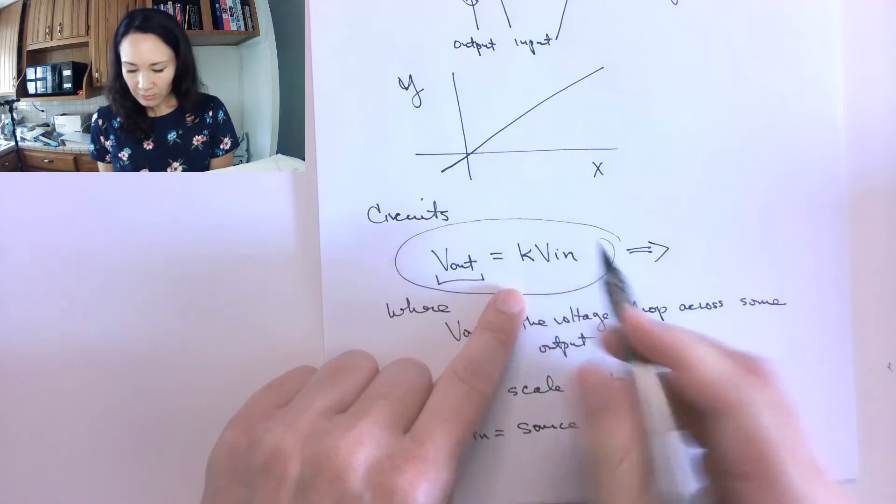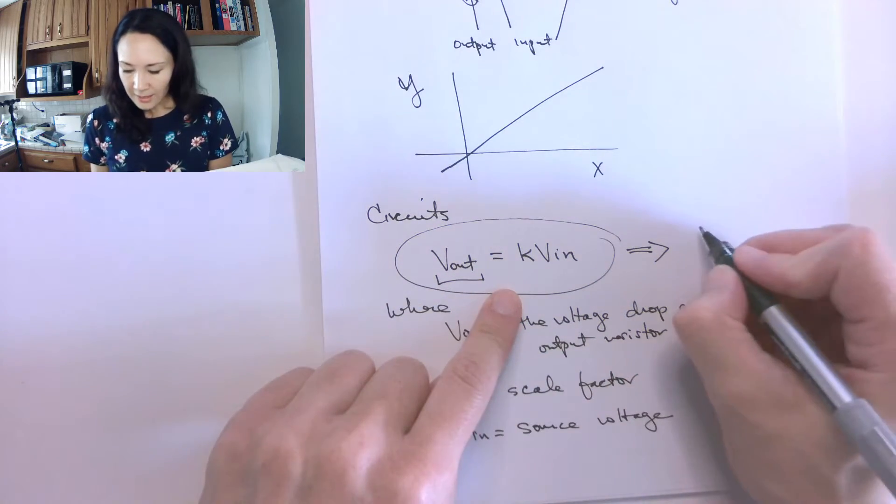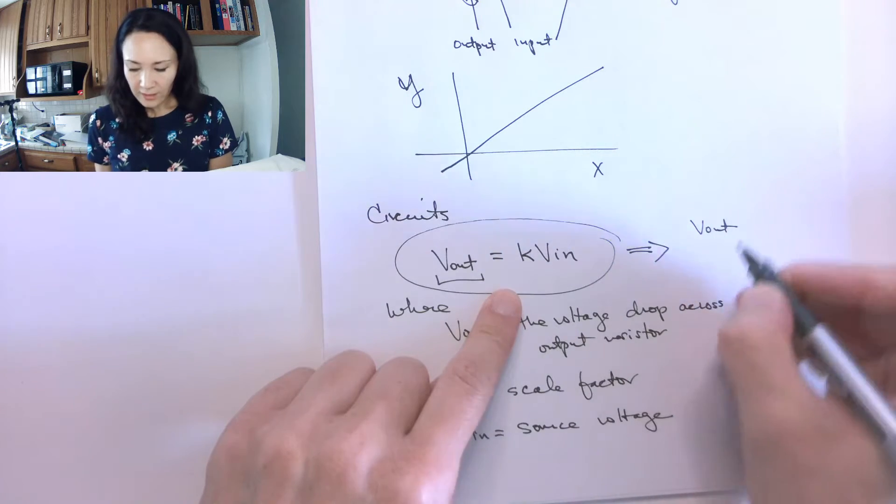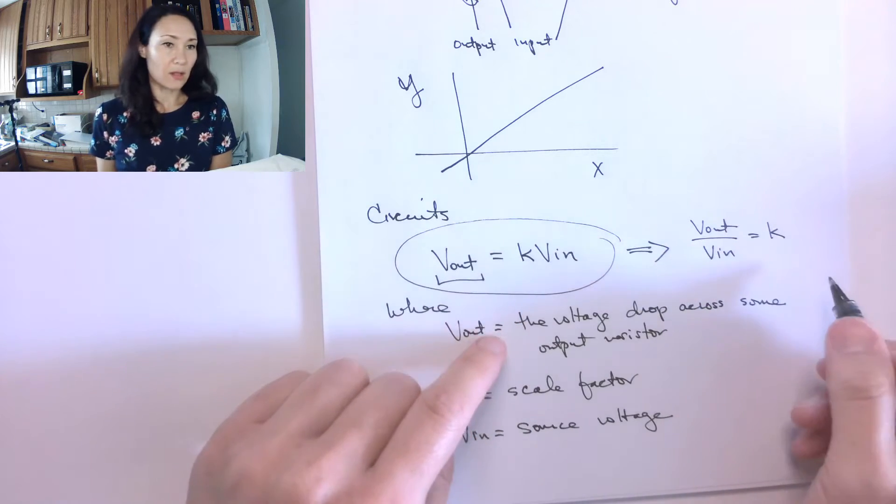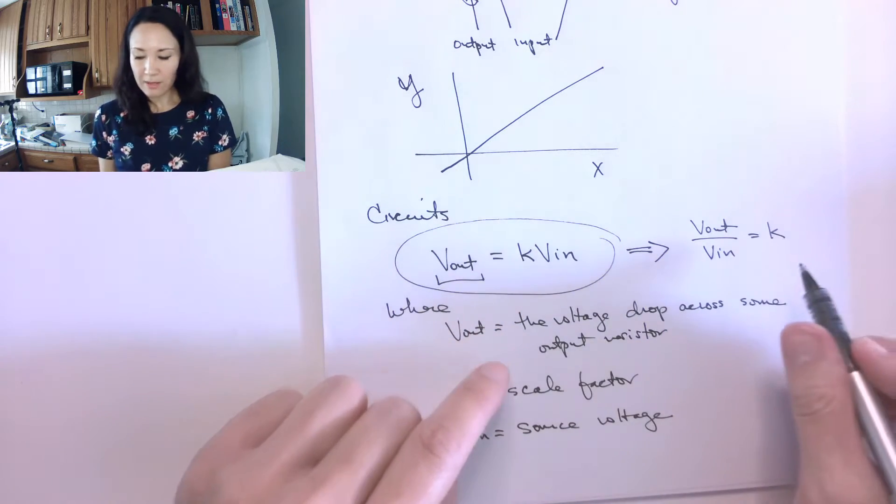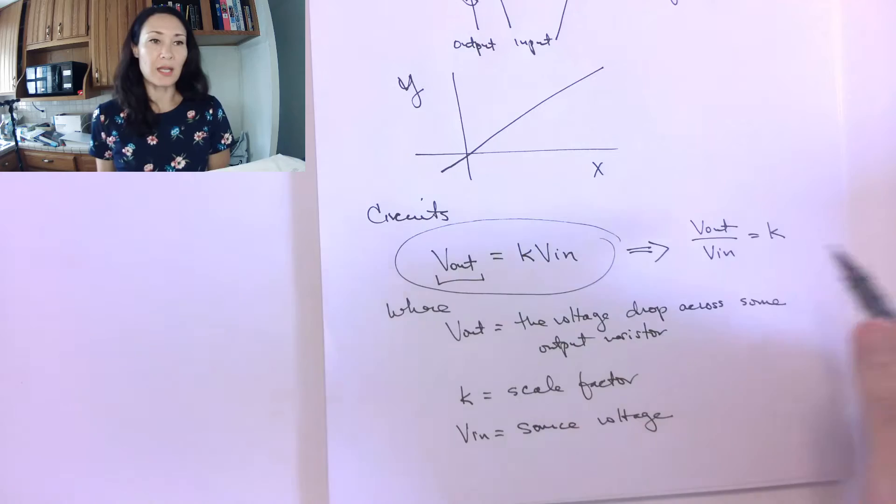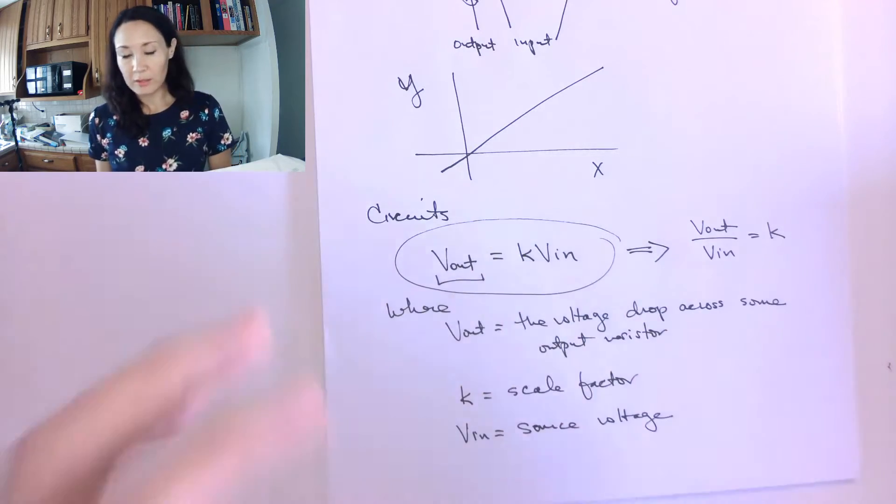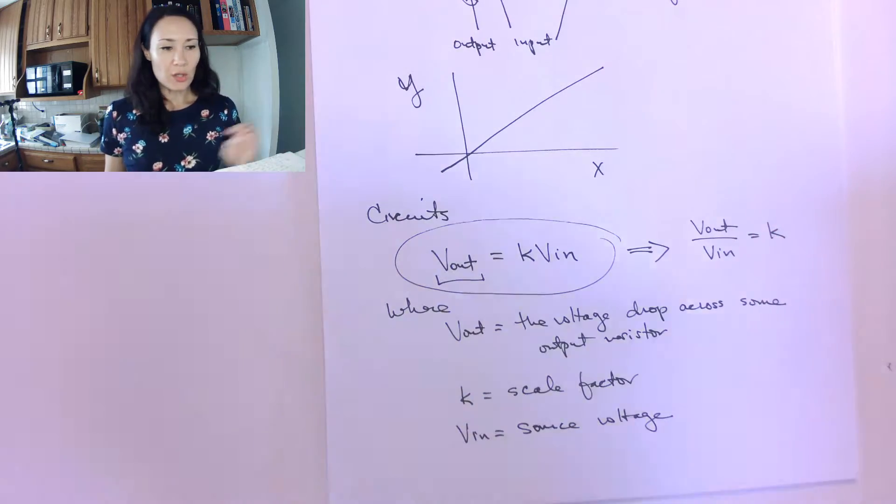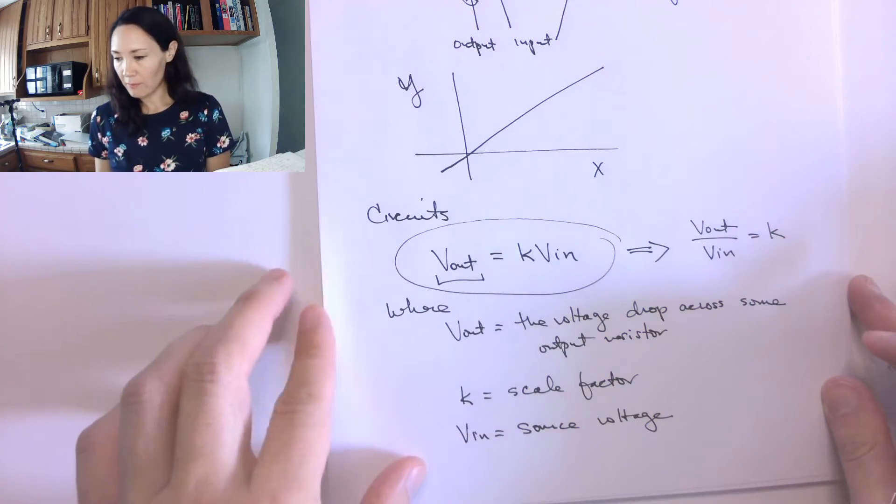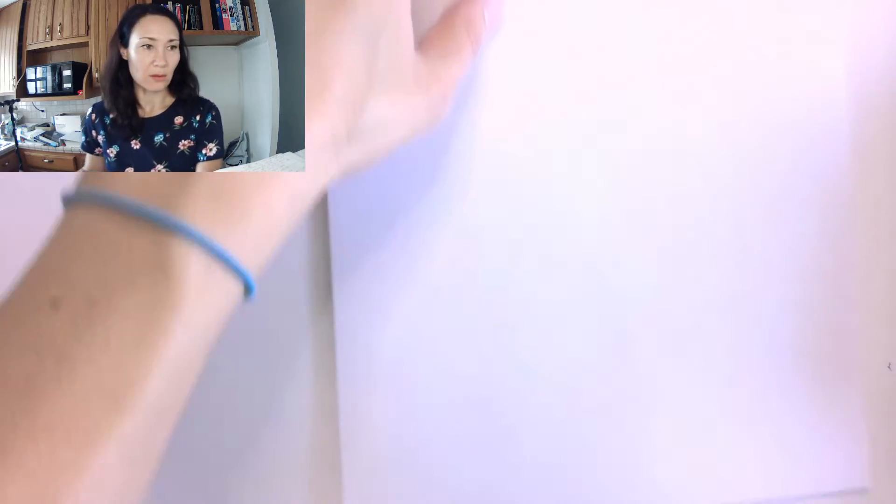So an implication of this is that if we know our v out and if we divide it by v in, so if we find this ratio, that's going to give us our k scale factor. So it might be beneficial for us to be able to manipulate it in this direction as well, depending on what information we're asked for in the circuit. So let me show you an example of how this works in a basic series circuit.